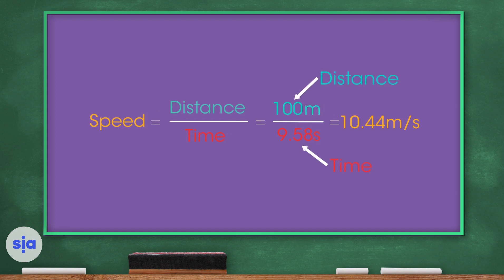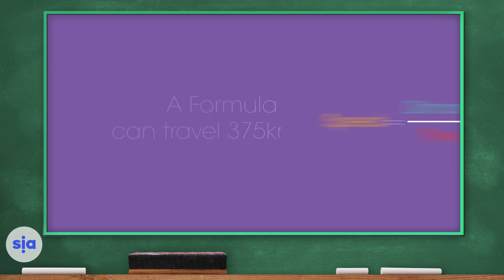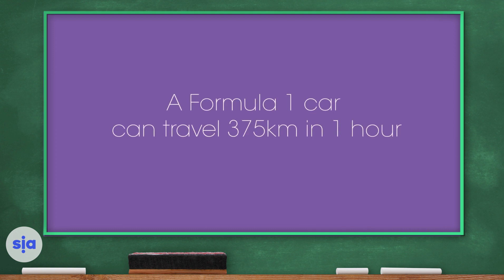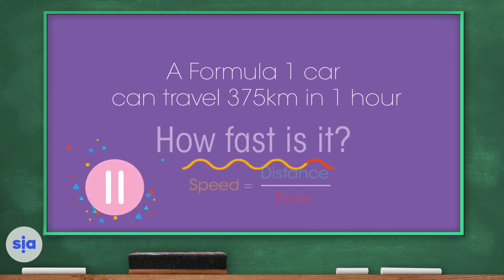In 2009, Usain Bolt set the world record for the 100-meter sprint in 9.58 seconds. Using speed equals distance divided by time: 100 meters divided by 9.58 seconds gives a speed of 10.44 meters per second. That's impressive — but how fast is an F1 car?